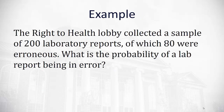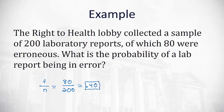Let's take a look at an example. The Right to Health lobby collected a sample of 200 laboratory results, of which 80 were erroneous. So what is the probability any one lab report will be an error? We divide the frequency by the number possible. The frequency of the errors was 80, divided by the number possible of 200 lab results, and when we divide, we end up with 0.40. So the probability of an erroneous lab report is approximately 40%.